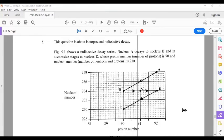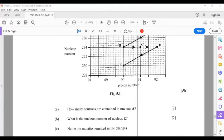The figure shows a radioactive decay series, nucleus A decays to nucleus B, and in successive stages to nucleus E whose proton number, number of protons, is 90, and nucleon number, number of neutrons and protons, is 230. Then we have a series of questions that we're going to use the graph to answer.